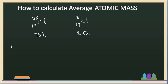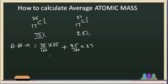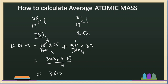Cl-37 has 25% abundance. So now we will calculate the average atomic mass. The calculation is: (75/100) × 35 + (25/100) × 37. Simplifying: (3/4) × 35 + (1/4) × 37. We calculate the average atomic mass of chlorine.